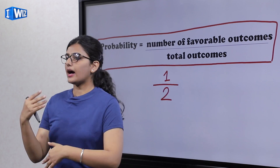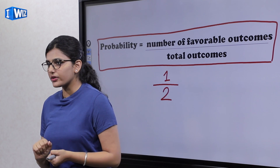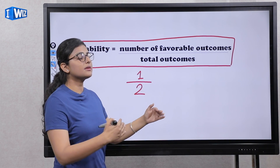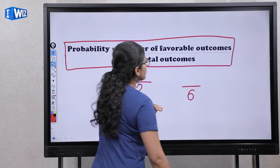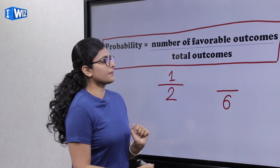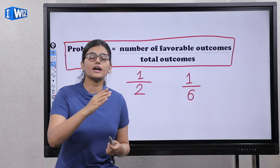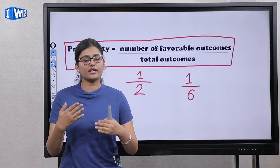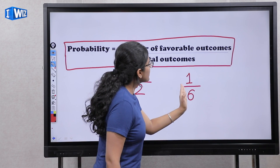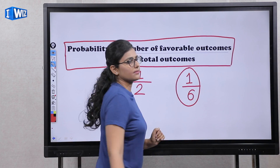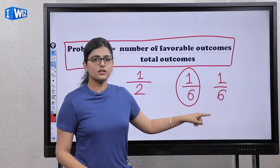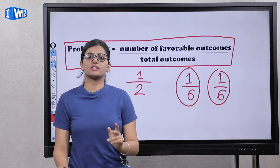For a die, what is the probability of getting number 4? The total numbers are 1 to 6, so total outcomes is 6. The number 4 is a single number, and all chances are equal whether it's 1, 2, 3, 4, 5, or 6. So the number of favorable outcomes is 1, and total outcomes is 6. The probability of getting a 4 is 1 by 6. Similarly, the probability of getting a 5 is also 1 by 6, since it's also a single number out of 6.